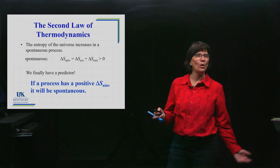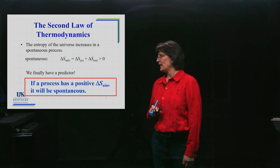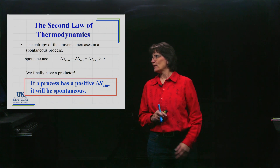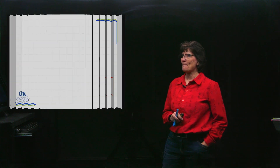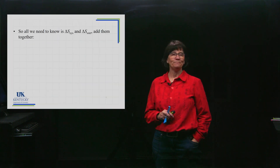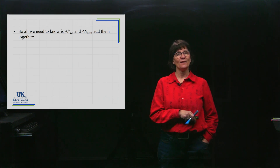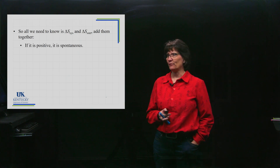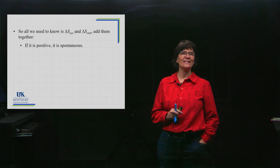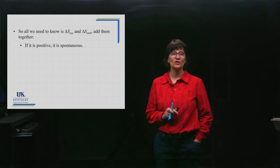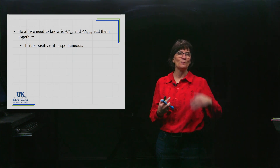The Second Law of Thermodynamics: the entropy of the universe increases for a spontaneous process. All we need to do is calculate the delta S of the system and the delta S of the surroundings, then add them together. If that sum is positive, the process is going to be spontaneous under the conditions being monitored.